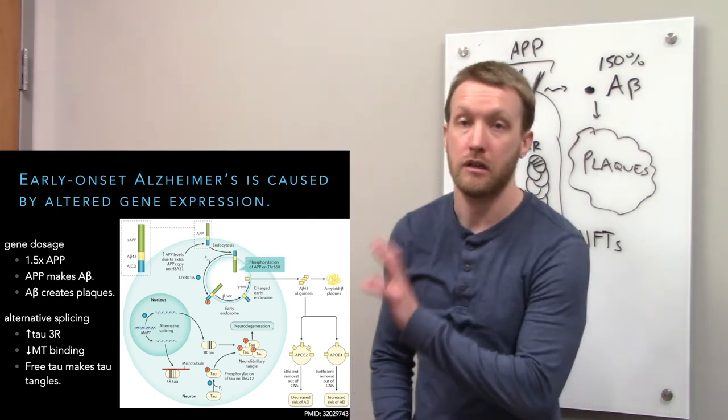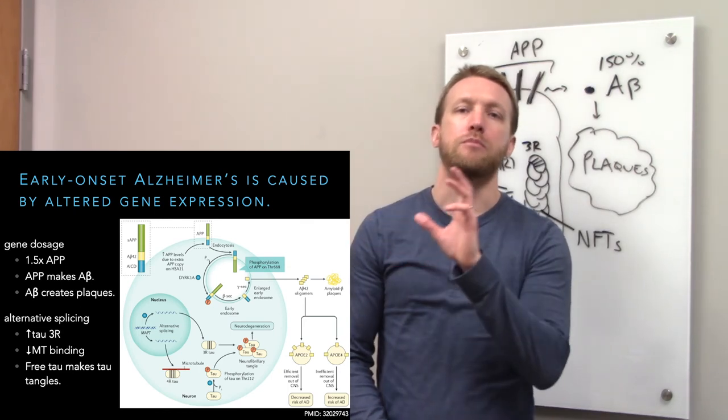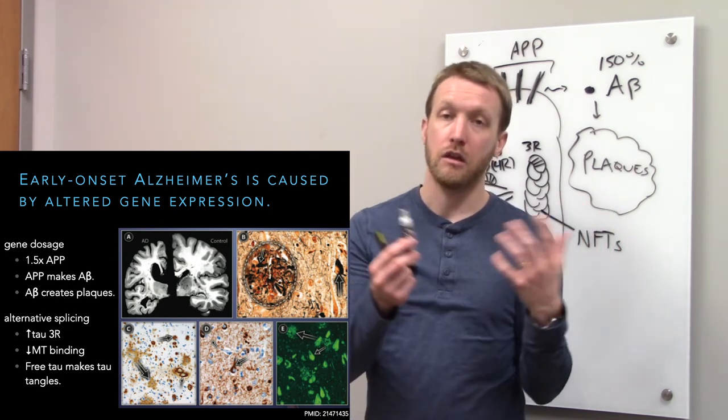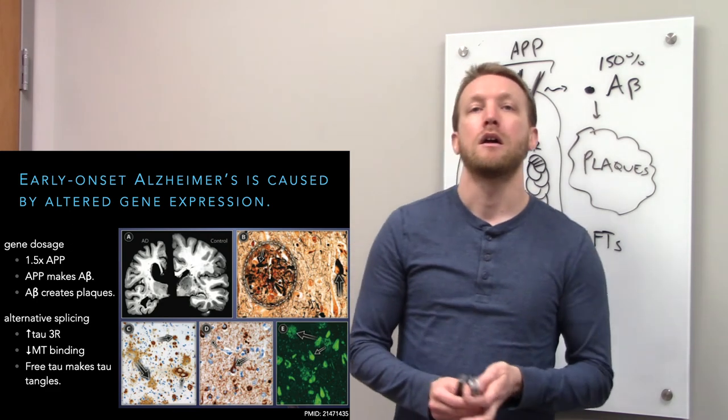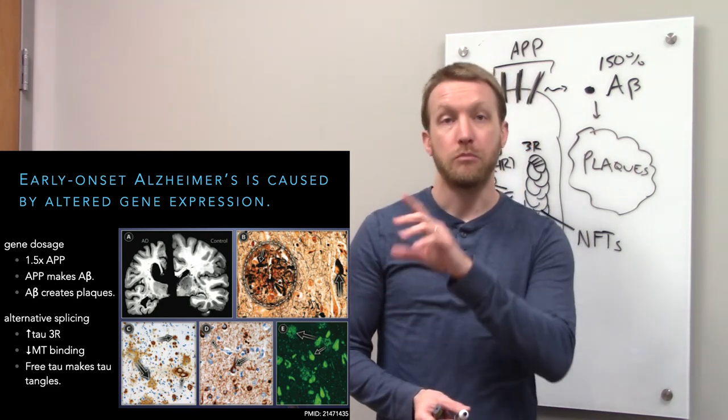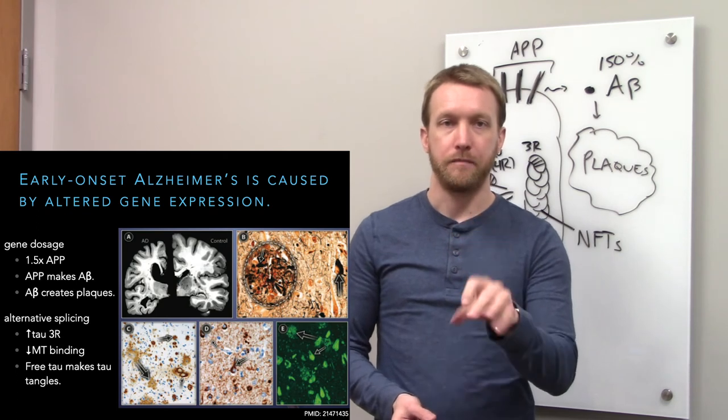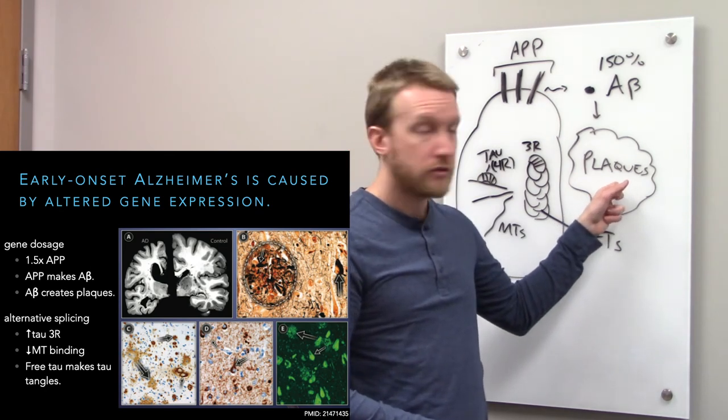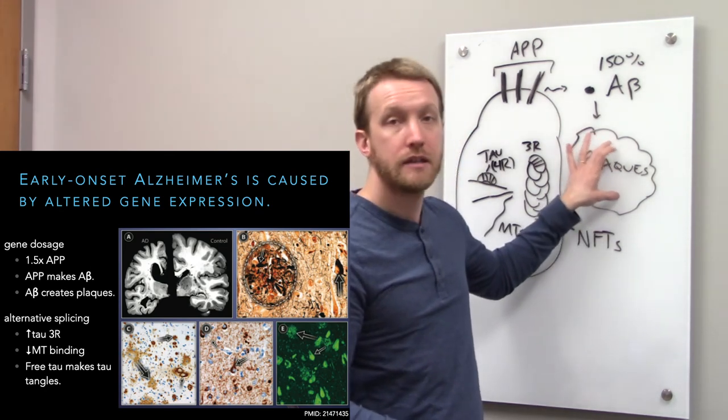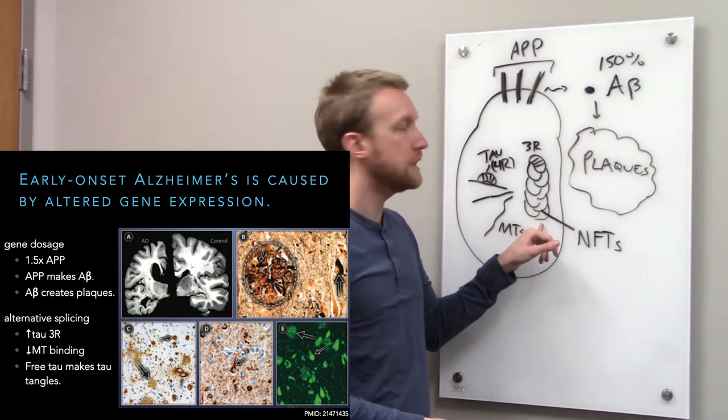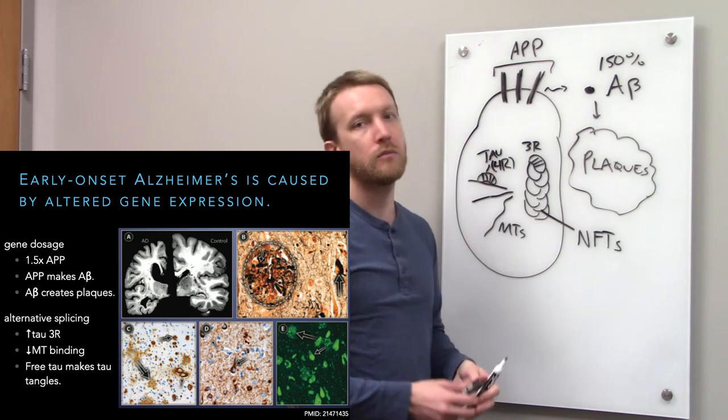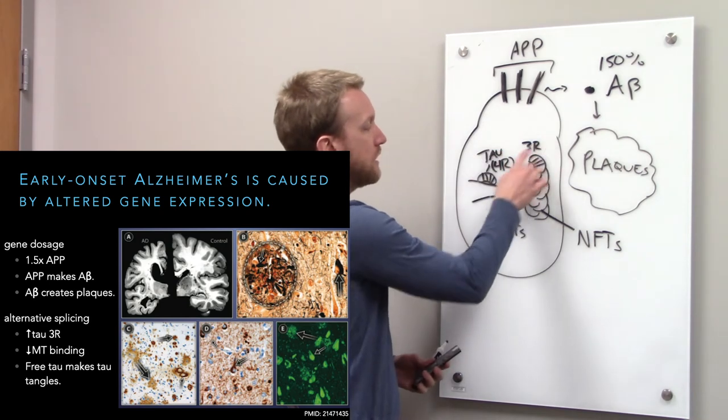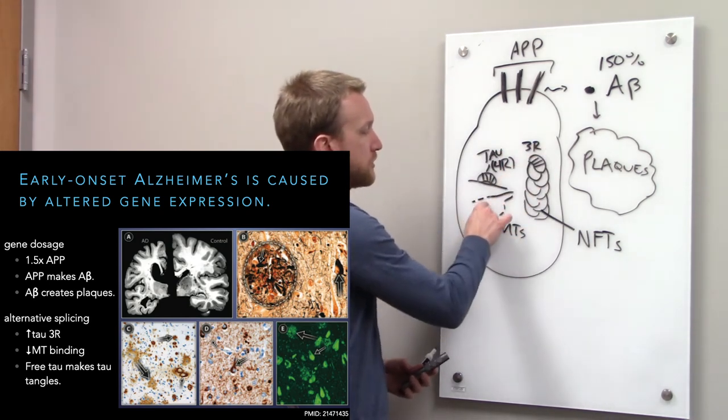The top left is showing us post-mortem brain samples from someone with Alzheimer's disease and an age-matched control. The brain is smaller in Alzheimer's disease, also Down syndrome. If we look at the bottom, this is showing us the plaques. They applied a stain that sticks into the amyloid plaques. We see a whole bunch of plaques outside the cell and neurofibrillary tangles inside the cell. If tau is sticking to itself and not the microtubules, microtubules fall apart.